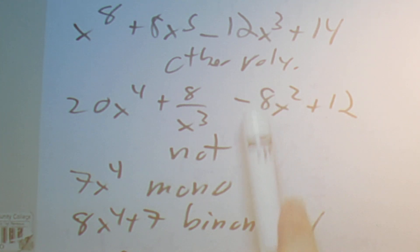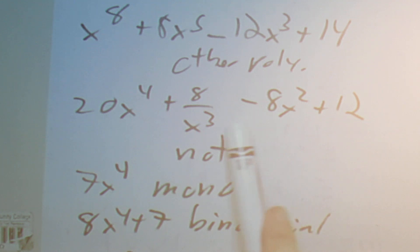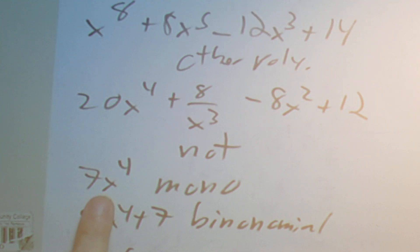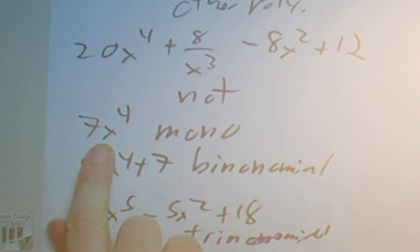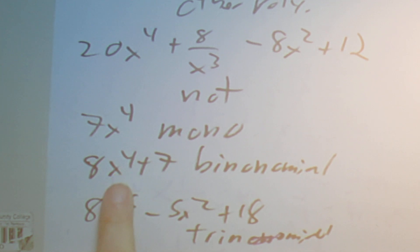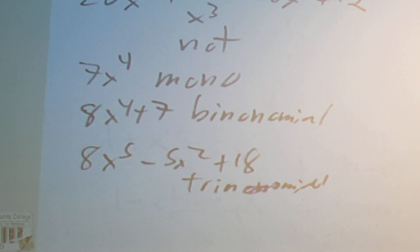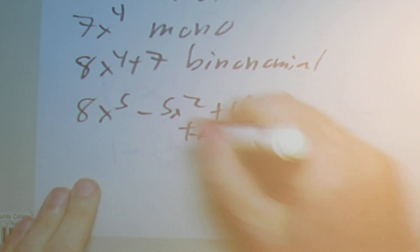This one has x in the denominator, so it's not a polynomial by definition. This has only one term so it's a monomial. This has two terms — 8x to the four plus seven — so it's a binomial. And the last one is a trinomial because it has three terms.